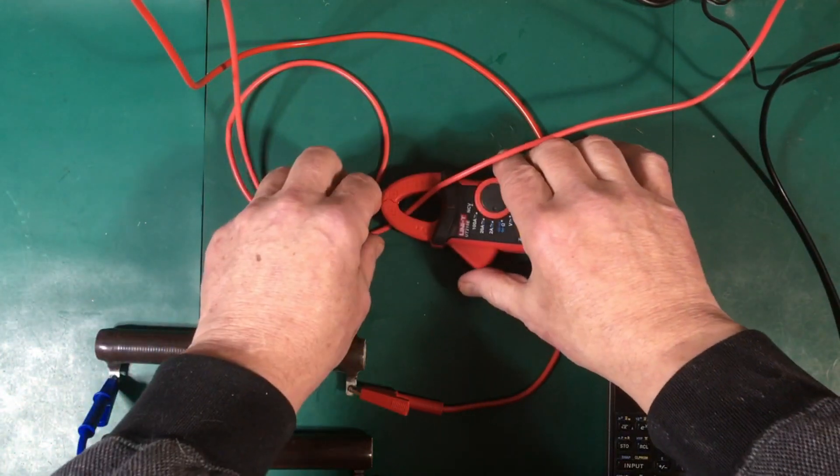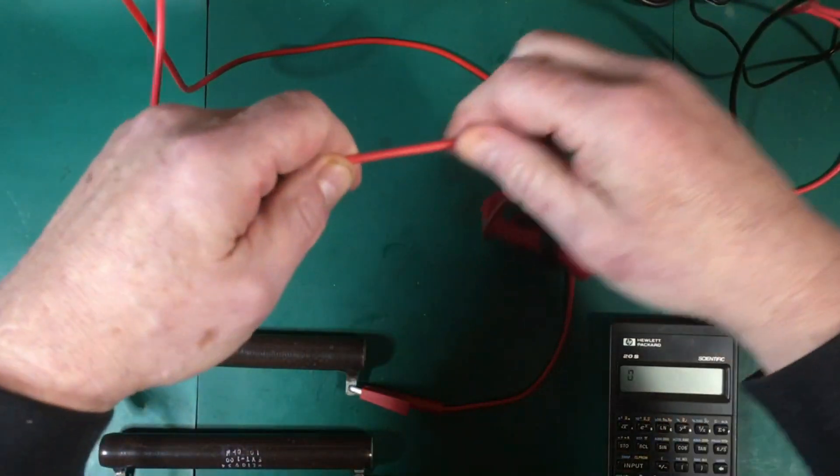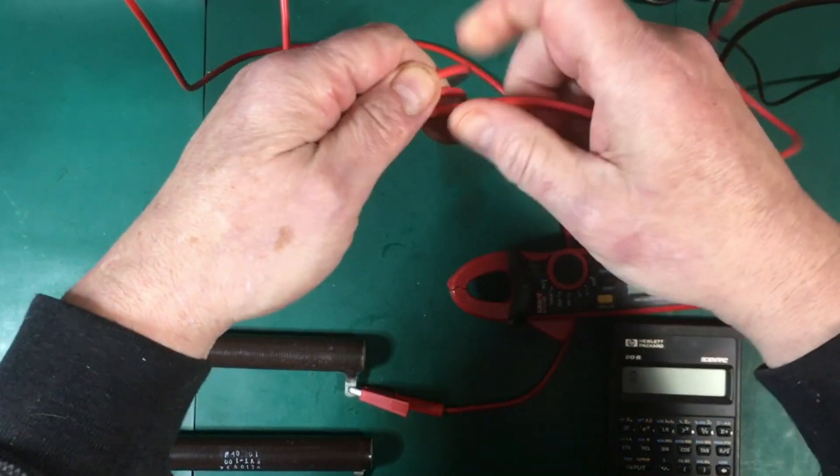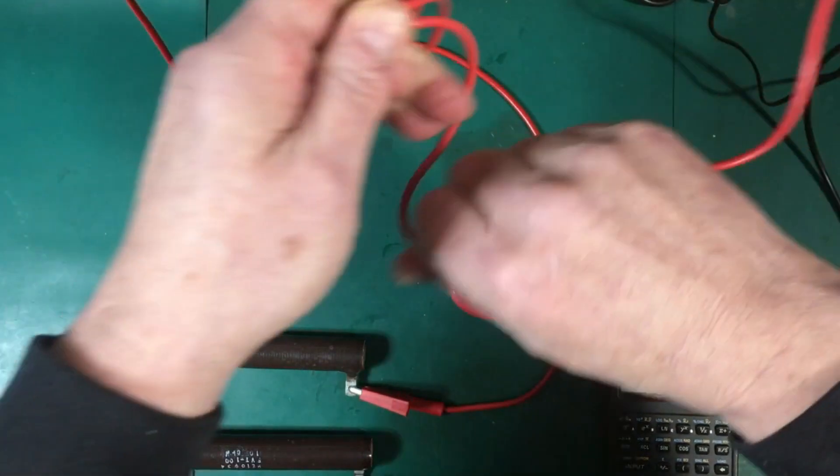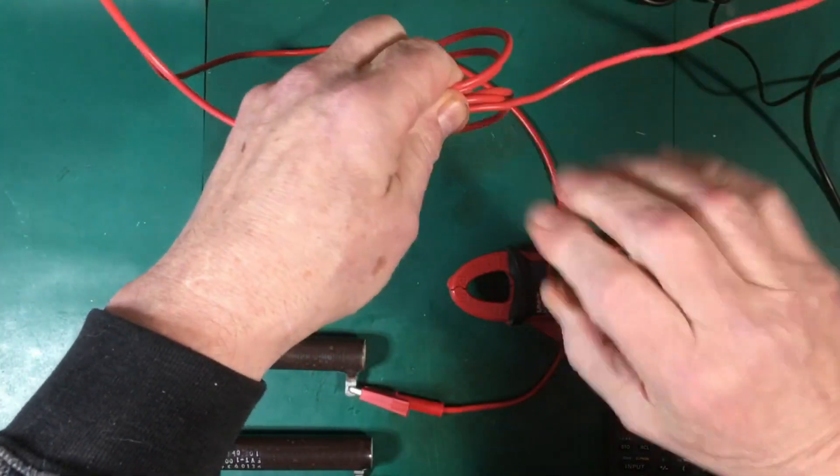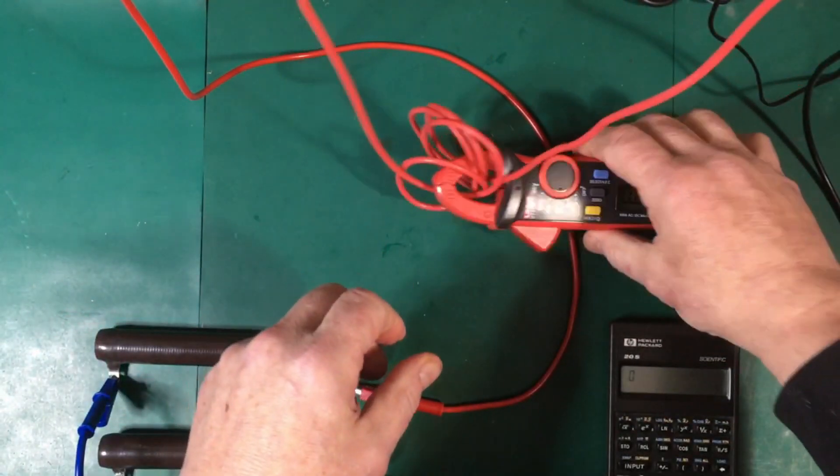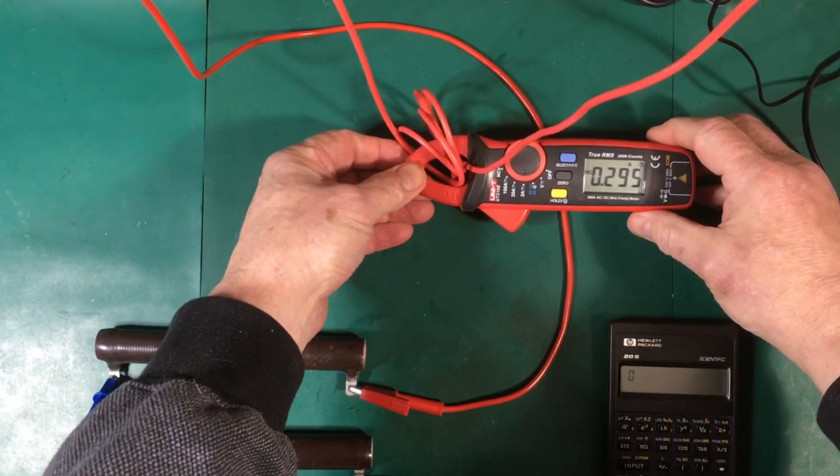So we've got this wire here and what I'm going to do is I'm going to put several loops through it. So we've got one there, add another one, two, three, four, and make it five. So we put the clamp on it now. We'll put it on the right way.